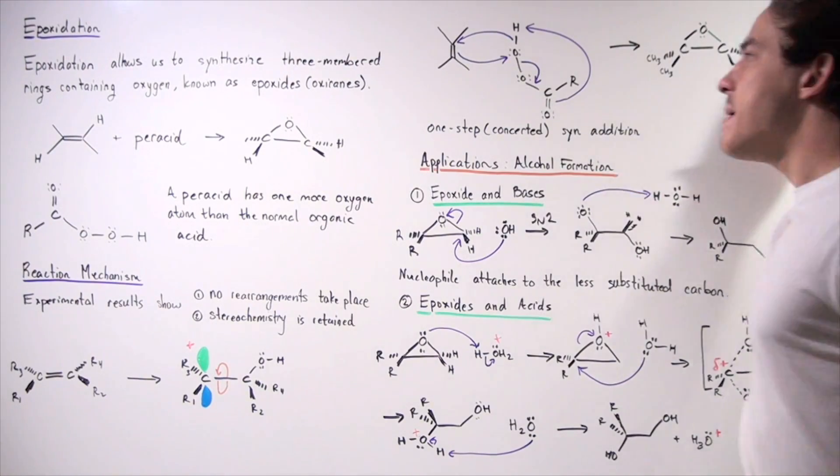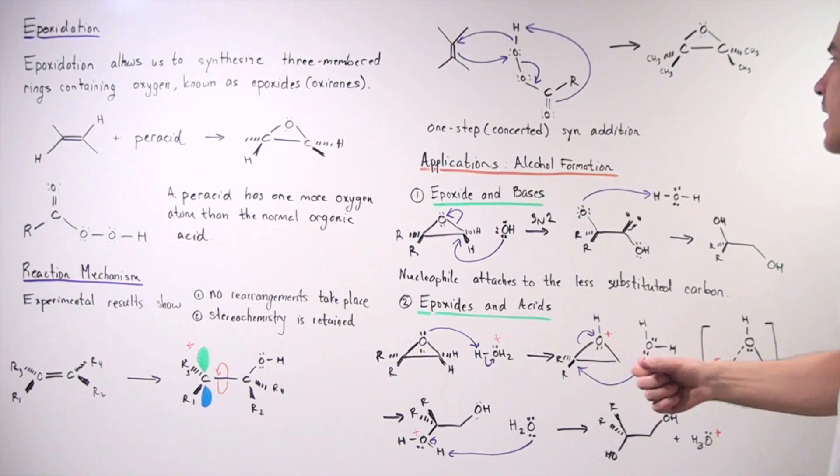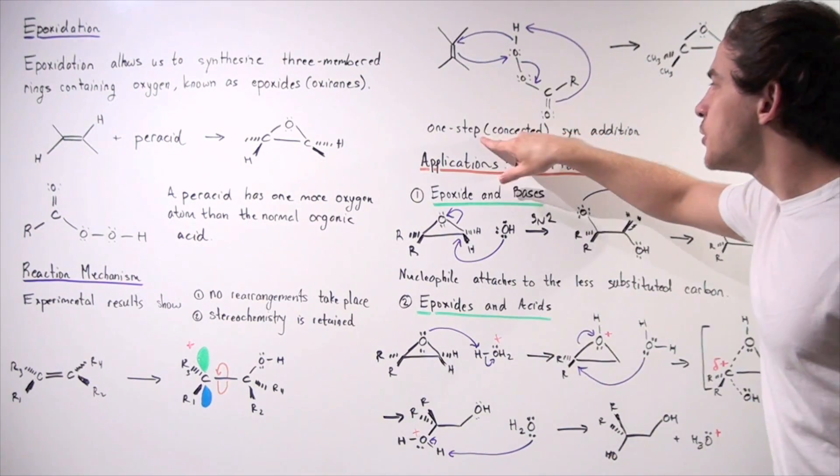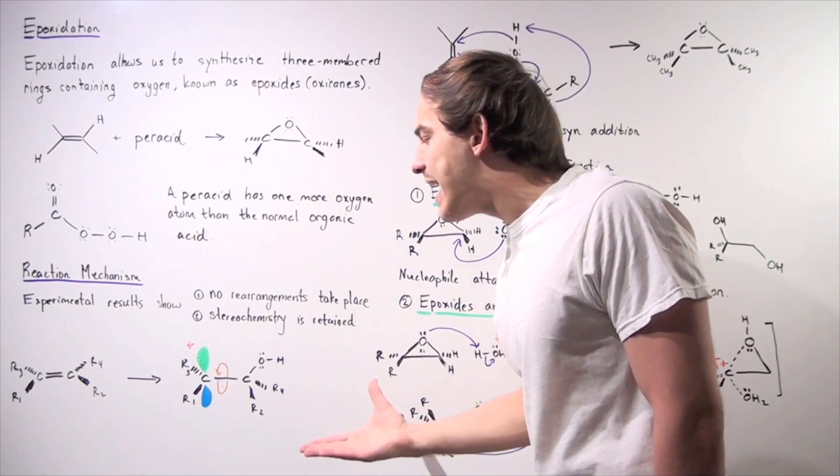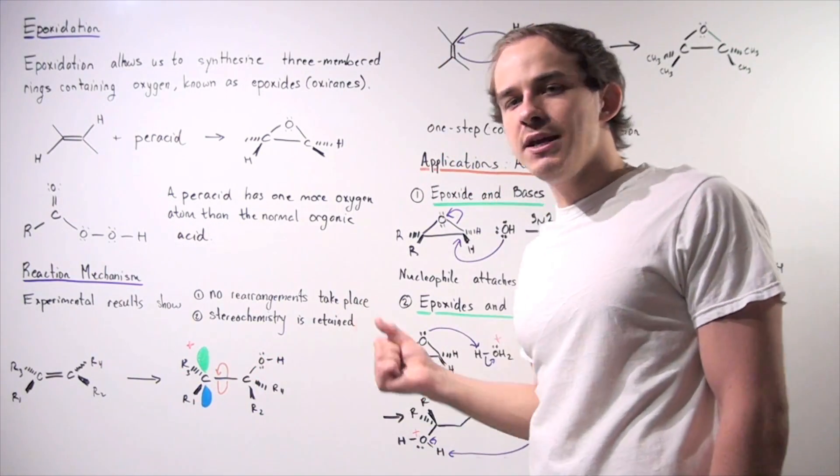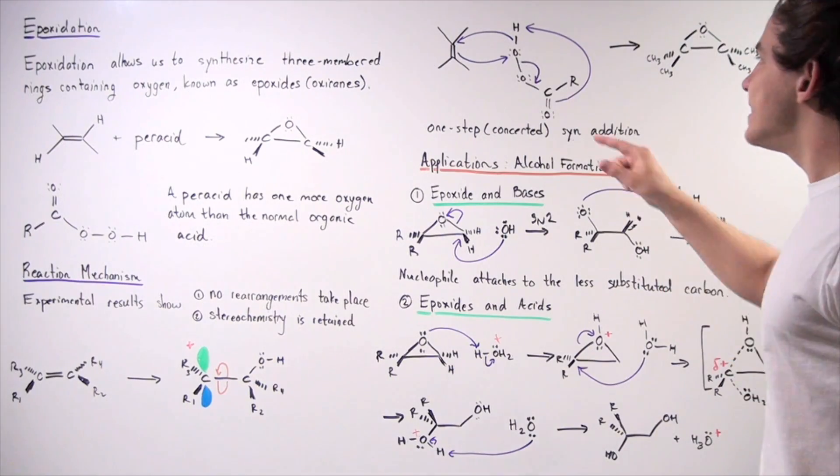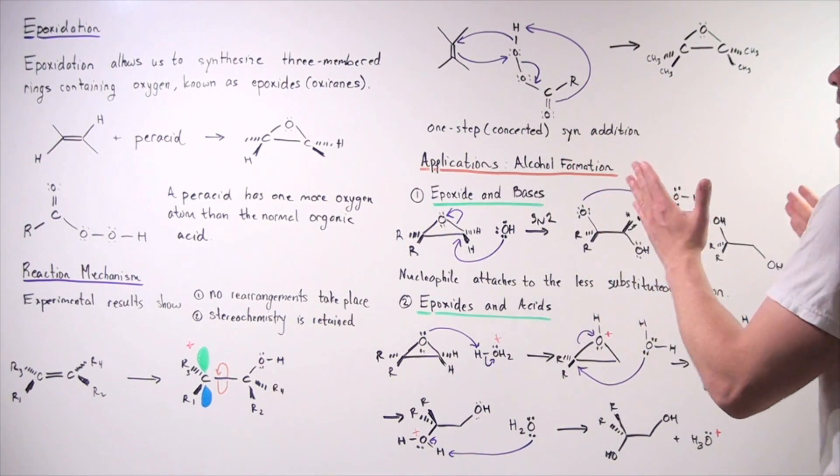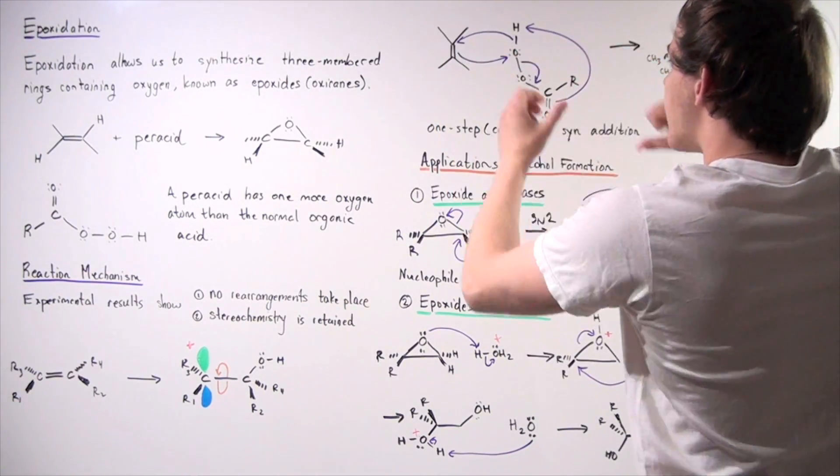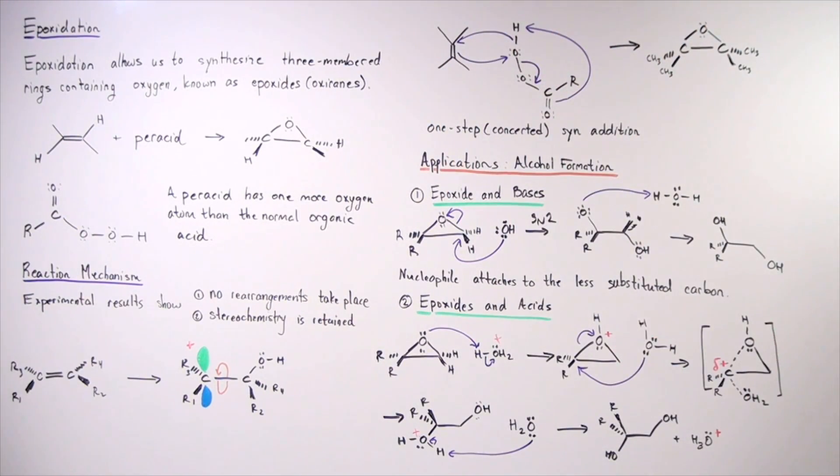The mechanism of our epoxidation reaction is a one-step syn addition. It's concerted and that basically means we do not have a carbocation intermediate. This is not a stepwise mechanism. It's a one-step mechanism that takes place when the alkene orients itself appropriately with this peracid.